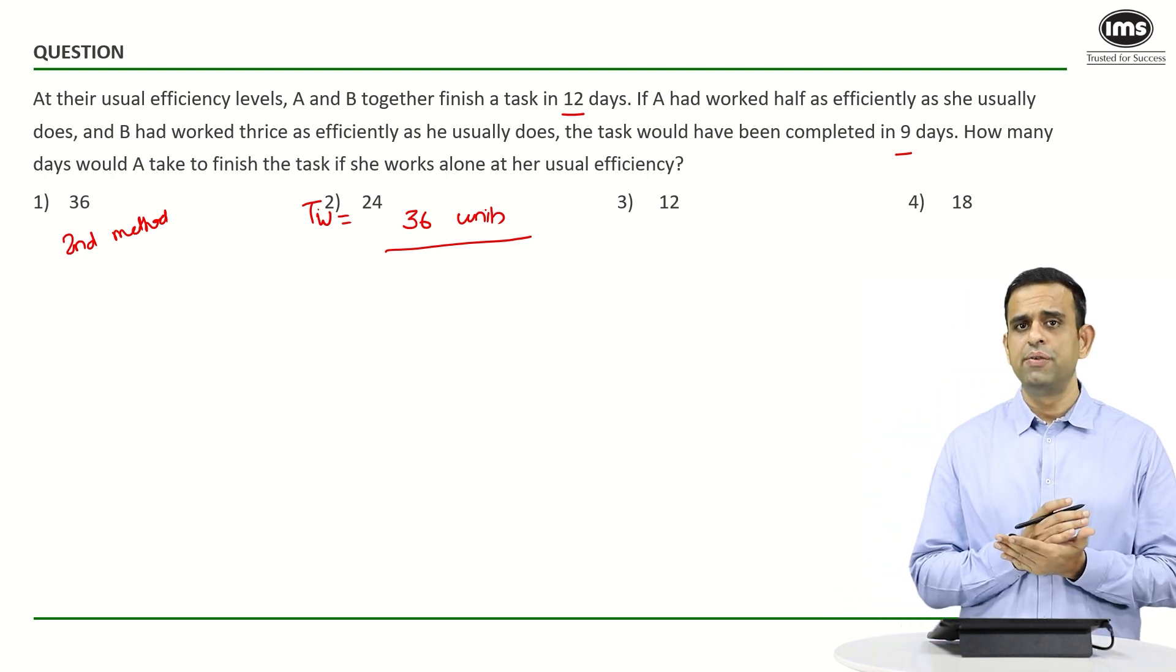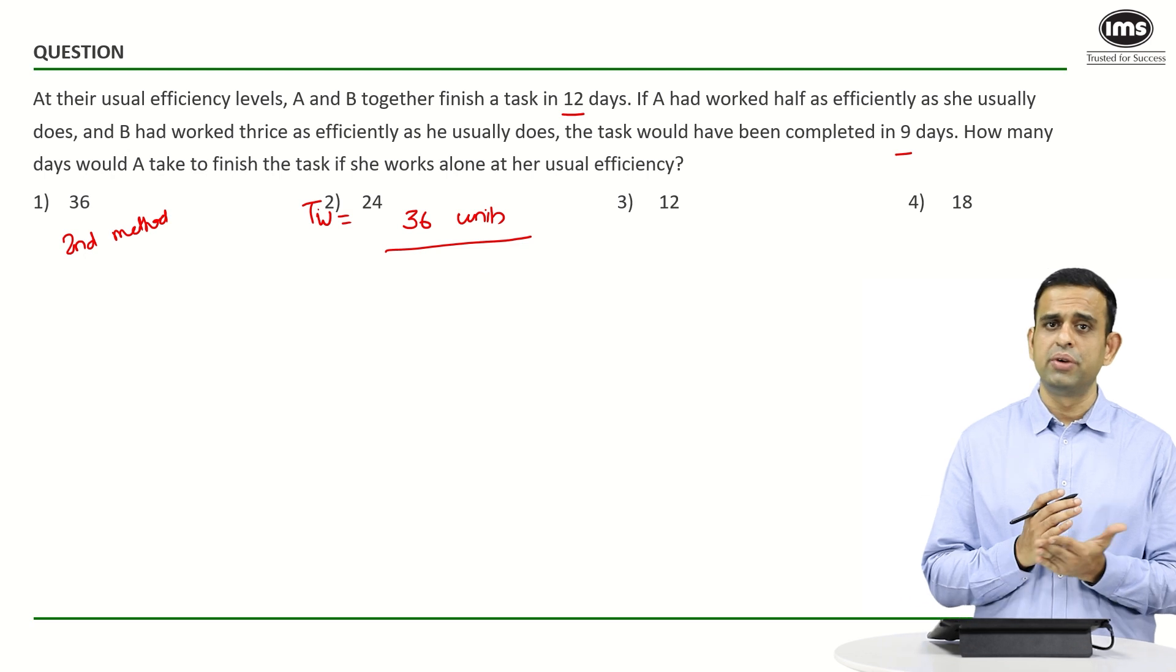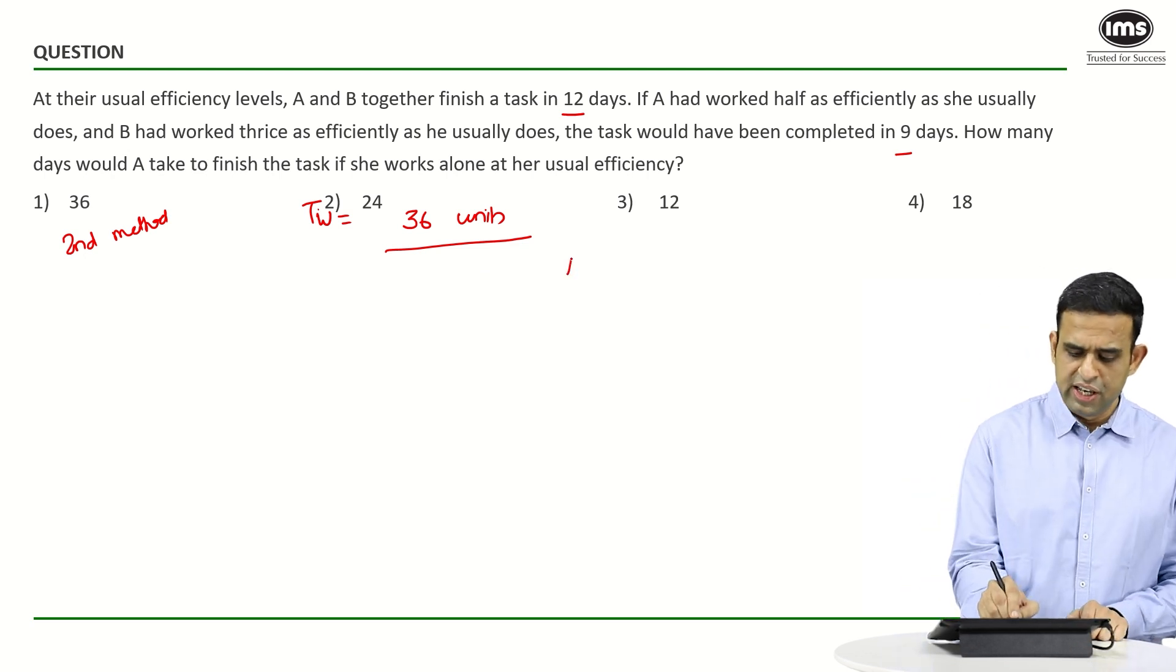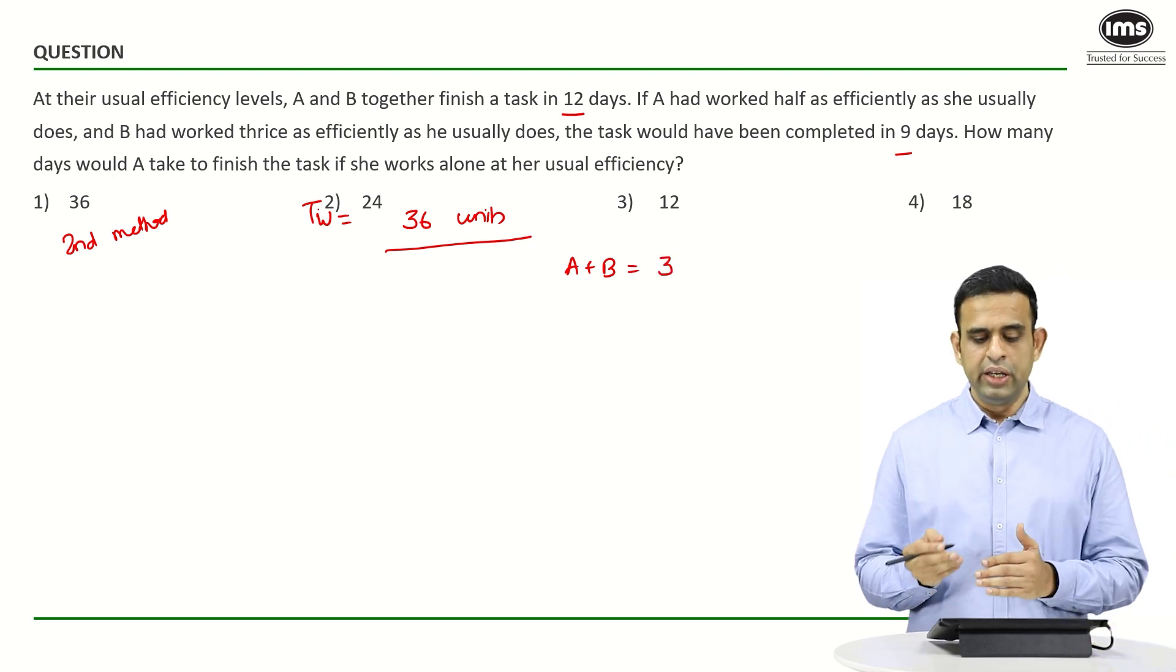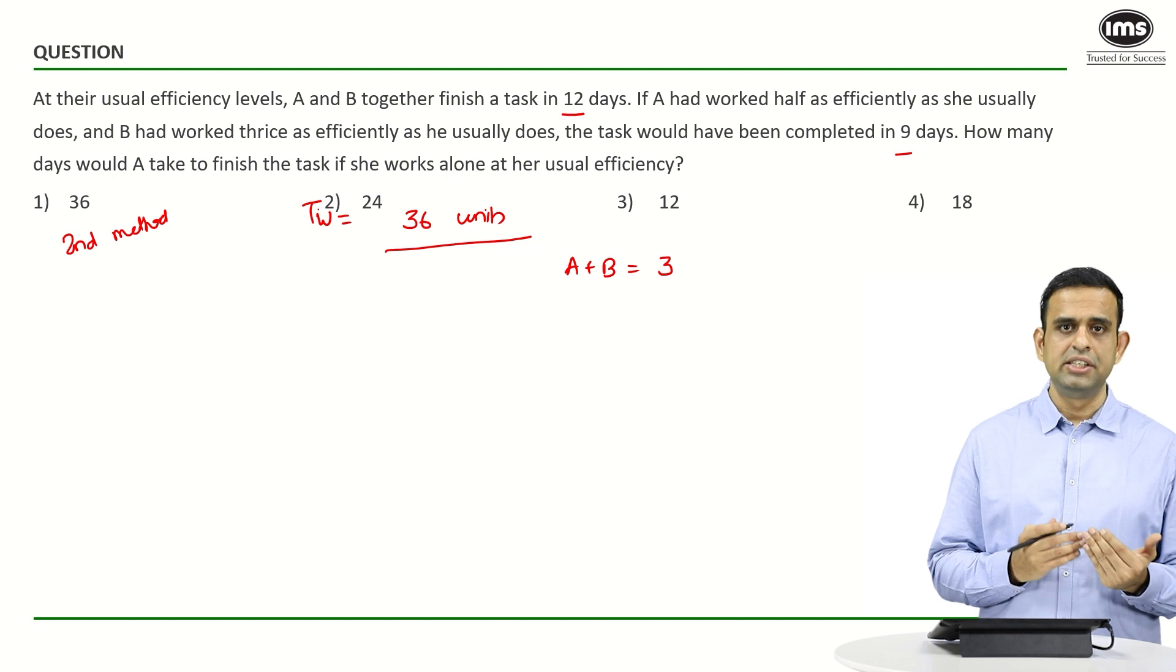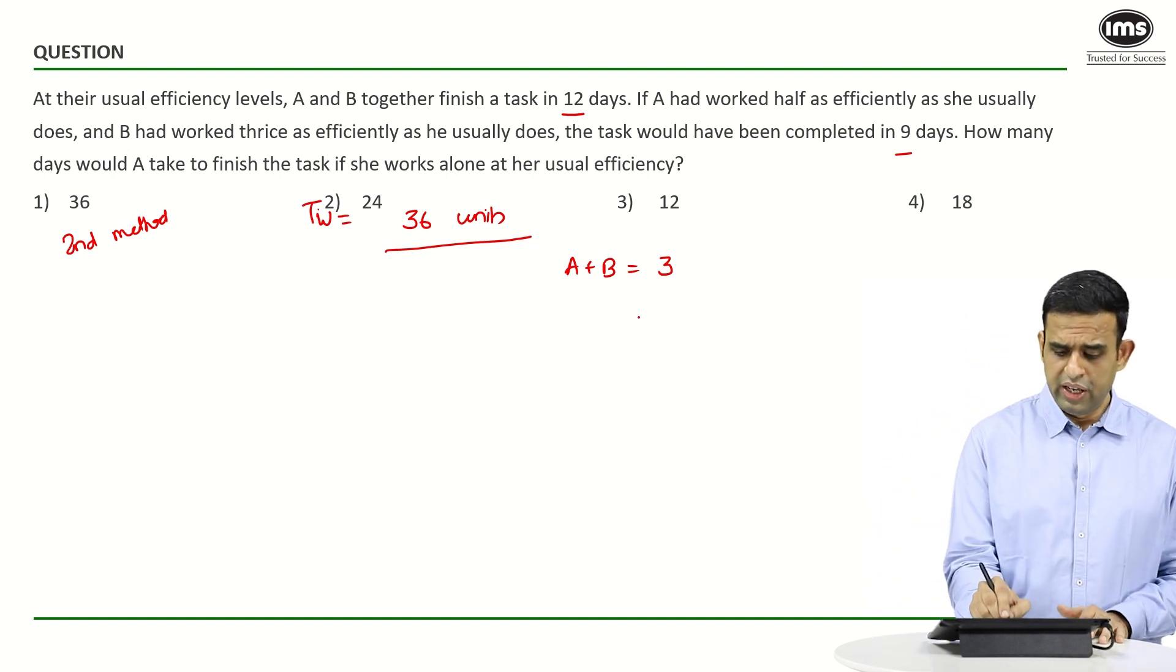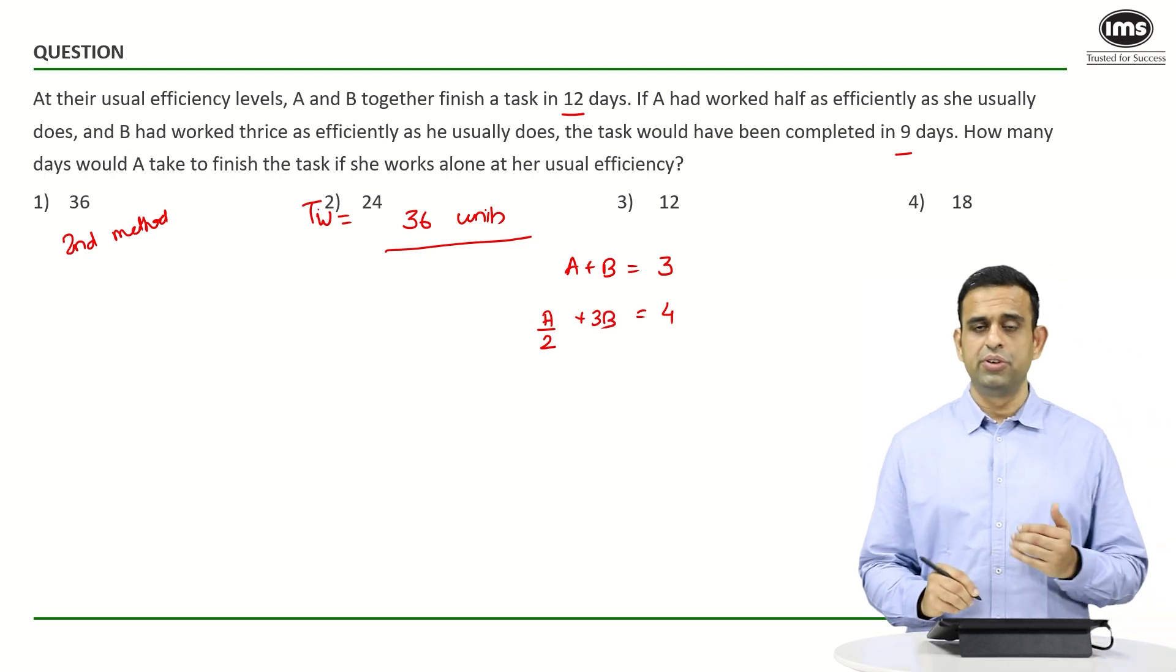In the first situation, the per-day work done by A and B together is 36 ÷ 12 = 3, so A + B = 3. In the second situation, they complete work in 9 days, meaning per day they do 36 ÷ 9 = 4. That equals A/2 + 3B = 4.